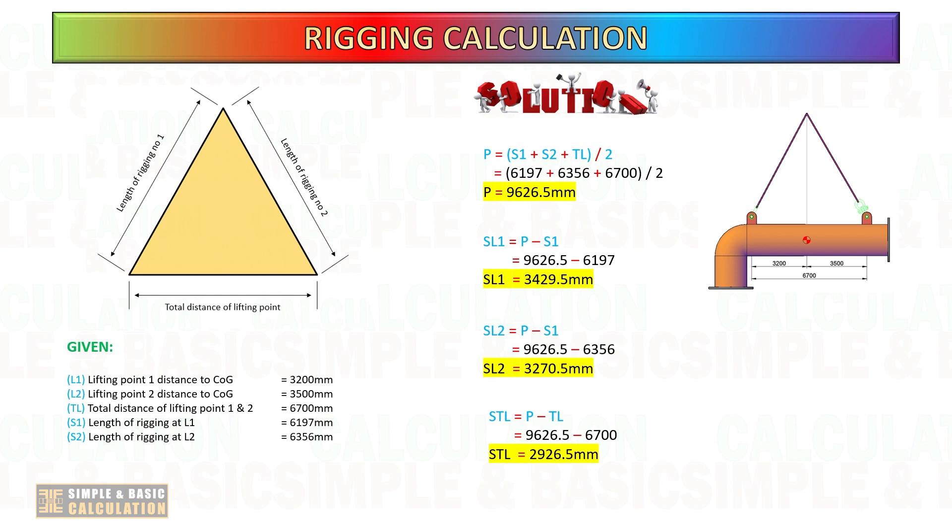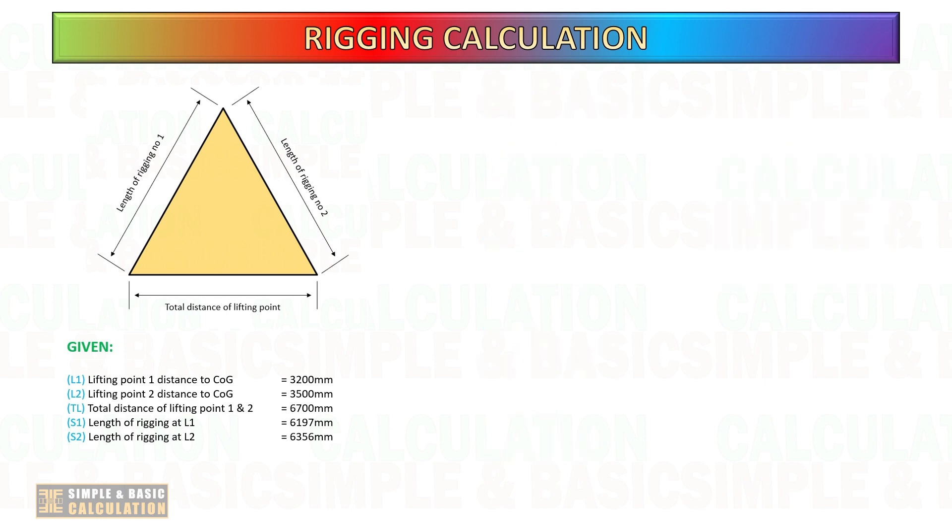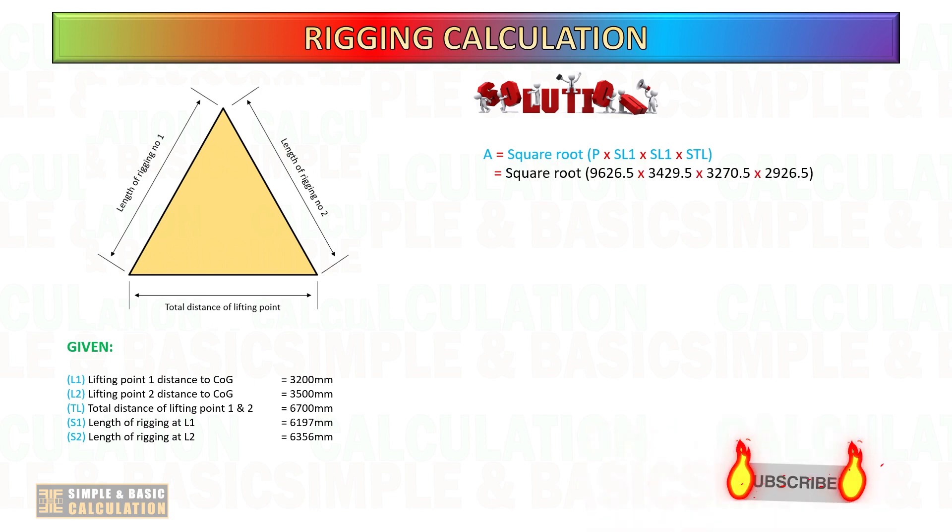If you like this video, please don't forget to like and subscribe to my channel. Thank you. Here we start to calculate the area and height of the triangle. By calculating this, we can get the new length of rigging at lifting point number 1 and lifting point number 2.